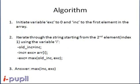Let's consider the algorithm. We start by initiating variables: exc to 0 and inc to the first element in the array. The variable exc, that is exclude, tells us the maximum sum obtained so far excluding the previous element encountered.